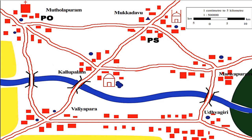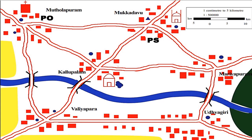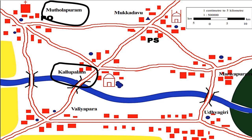Question number two: How long should he travel from Udegiri to Mutholabura Market via Valiya? Question number three: How much distance should be covered from Mutholabura back to his home at Kallupalap via Mukkada?